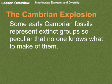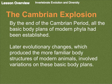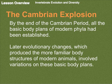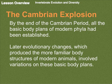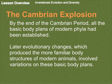Some early Cambrian fossils represent extinct groups so peculiar that no one knows what to make of them. By the end of the Cambrian period, all the basic body plans of modern phyla had been established — so that cladogram we've looked at, the theory is that all of that was done by the end of the Cambrian period. Later evolutionary changes, which produced the more familiar body structures of modern animals, evolved variations on these basic body plans, meaning there have been minor changes since.